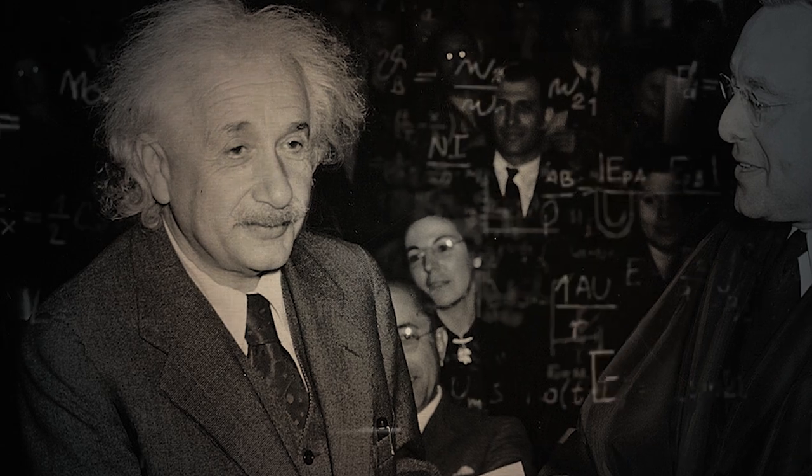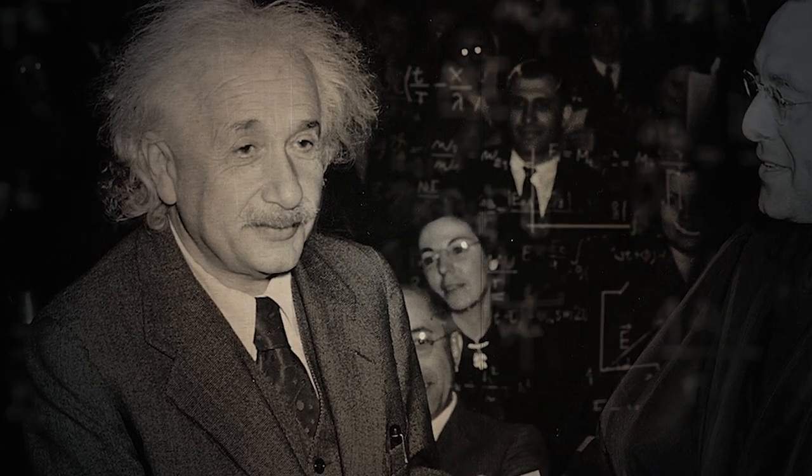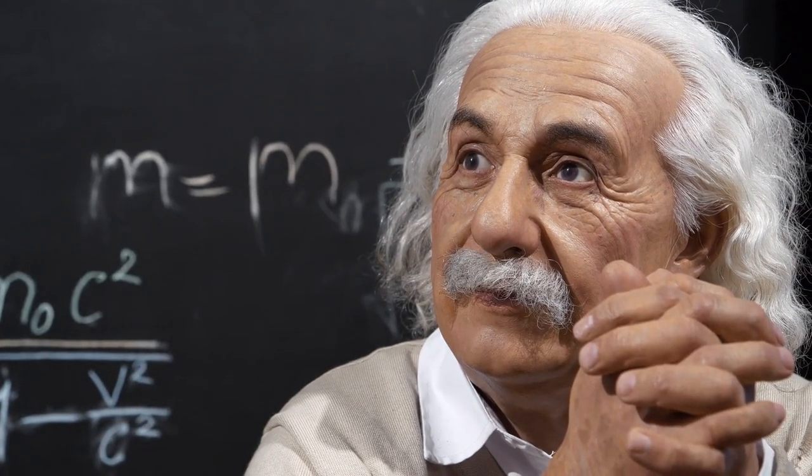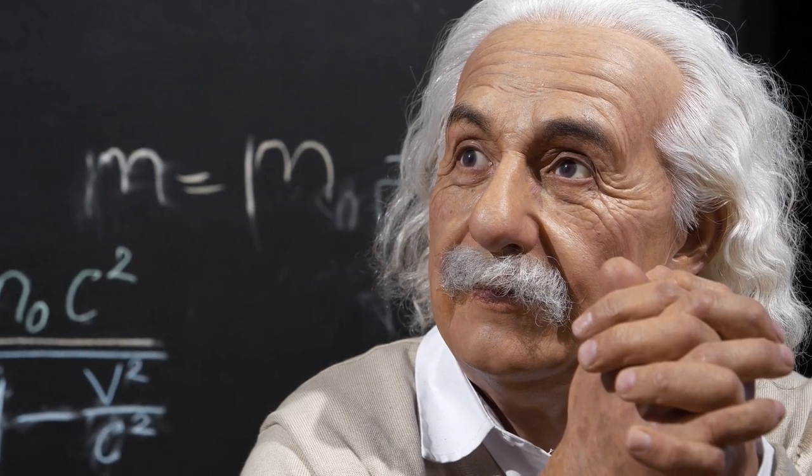Einstein's relativity is an impressive mathematical facade that bewitches and conceals the errors it contains. It resembles a beggar wrapped in purple whom ignorant people take for a king.